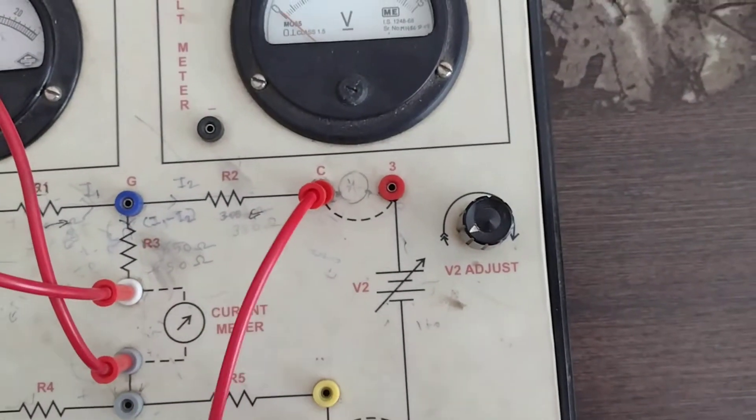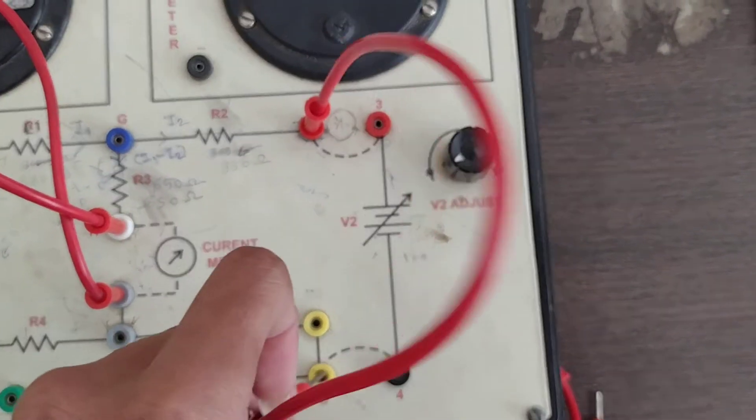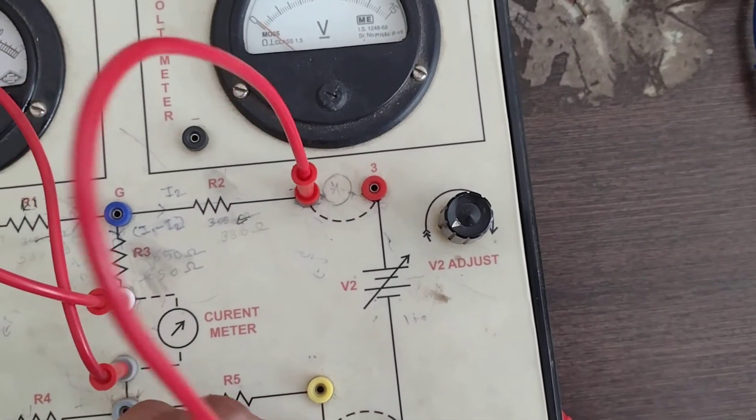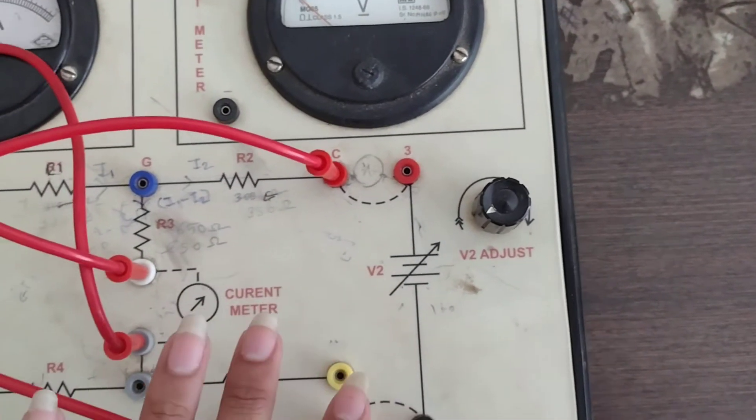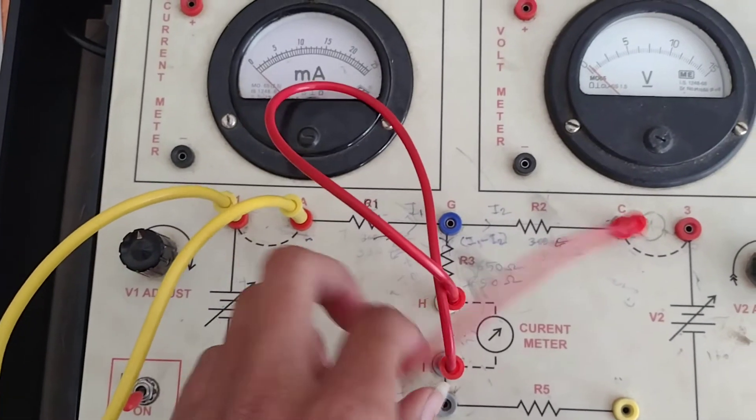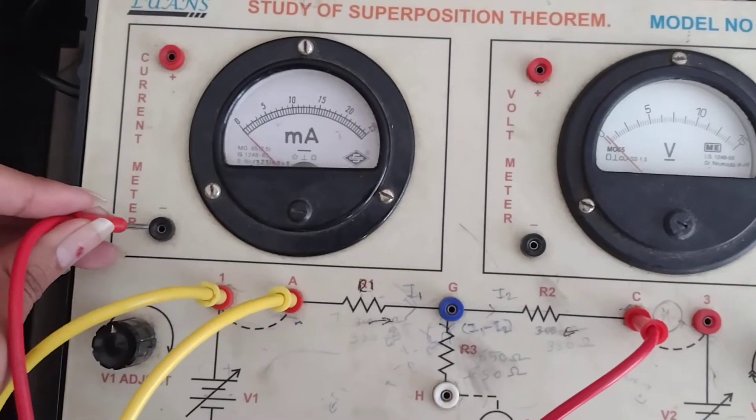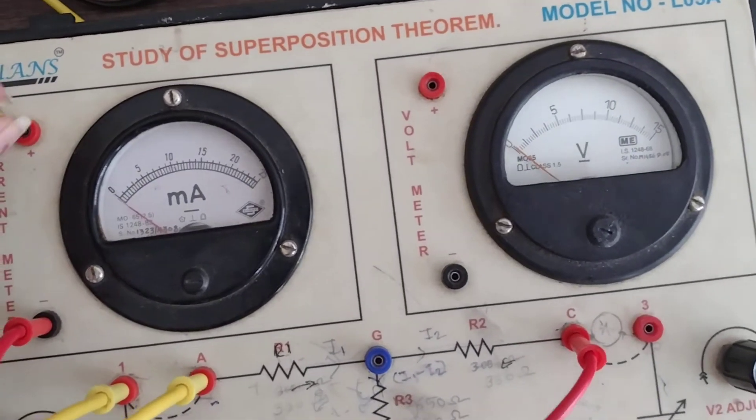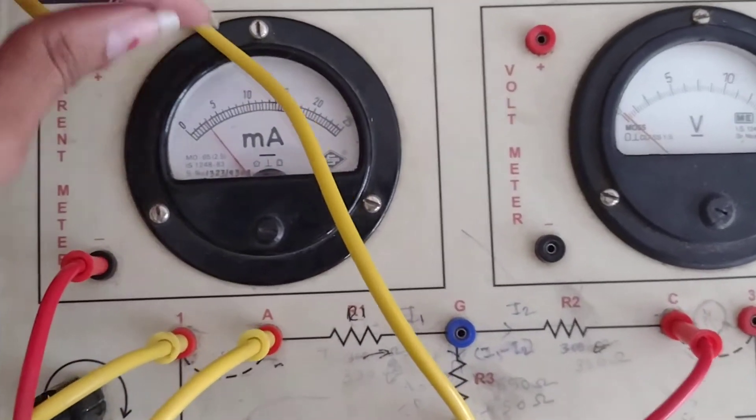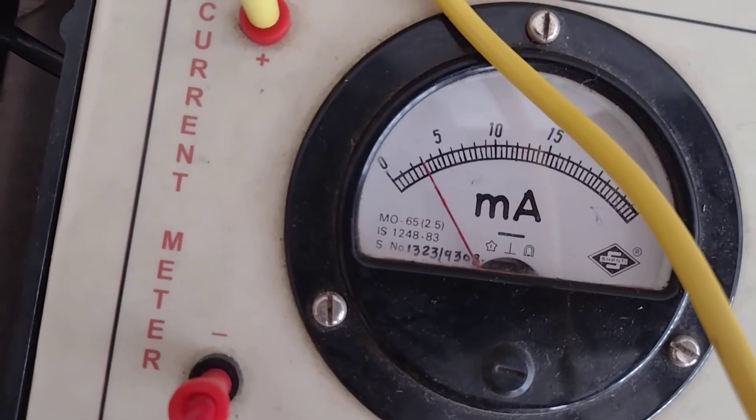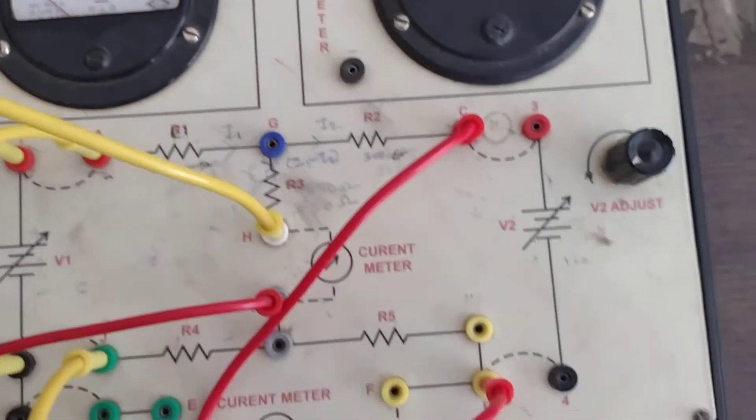To remove V2, we short circuit points C and D. The open circuit removes the V2 source. Now we measure the current through the branch. The current is 3 milliamperes. This is I1.